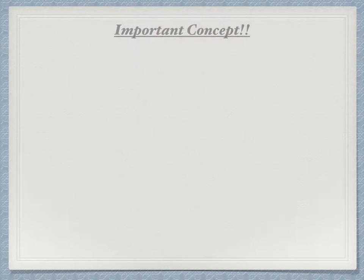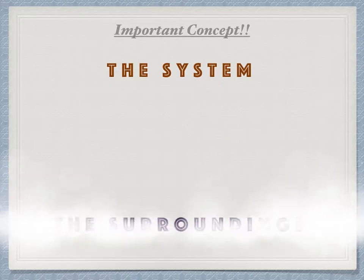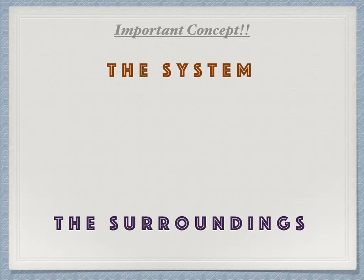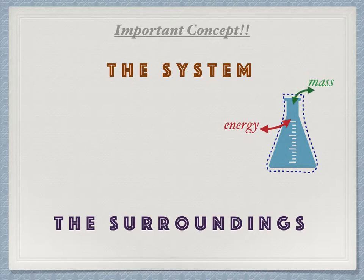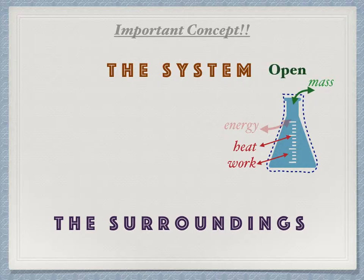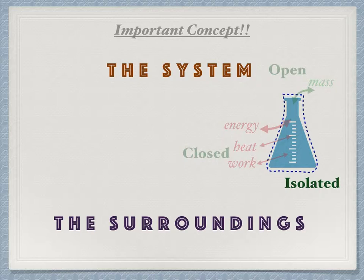There's another fundamental idea to emphasize: throughout thermodynamics, we continually speak about the system and the surroundings. We might envision a reaction occurring inside an Erlenmeyer flask, drawing an imaginary boundary around it. Thermodynamics asks that we carefully monitor the flow of energy and mass across this boundary. An open system allows for the flow of mass and energy in both forms. A closed system only allows for energy transfer. An isolated system inhibits both mass and energy transfer.